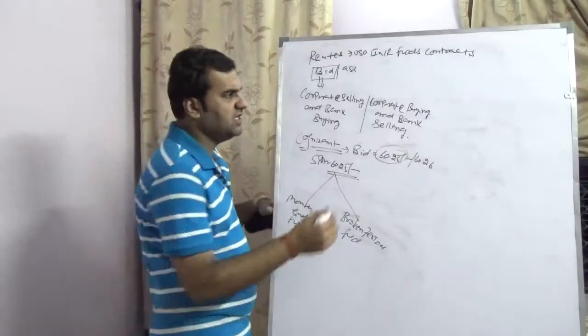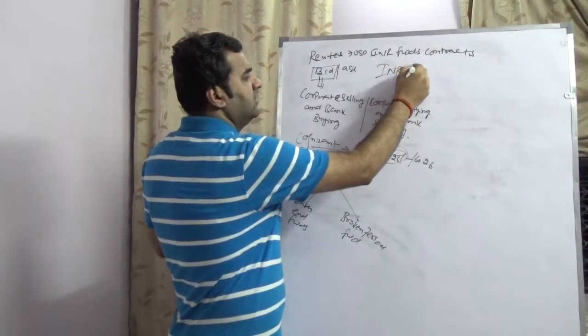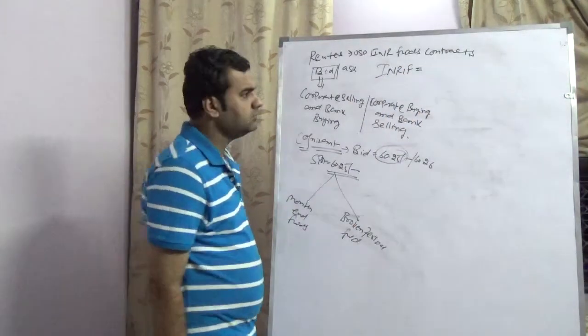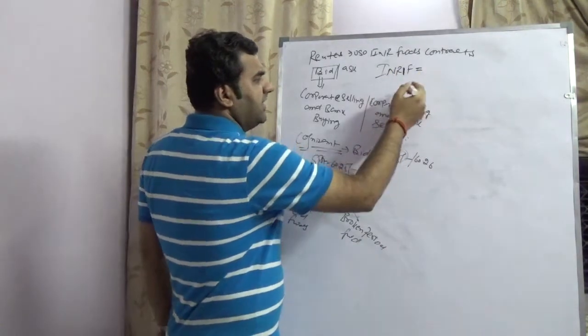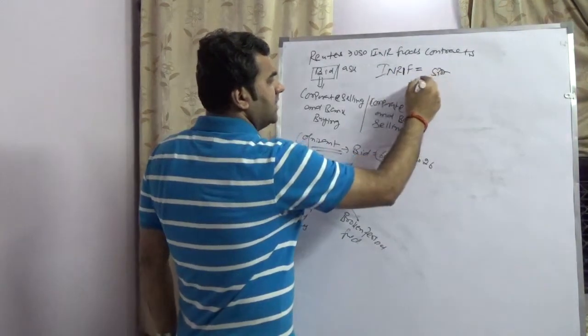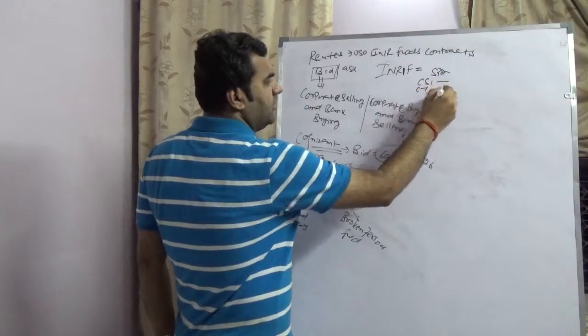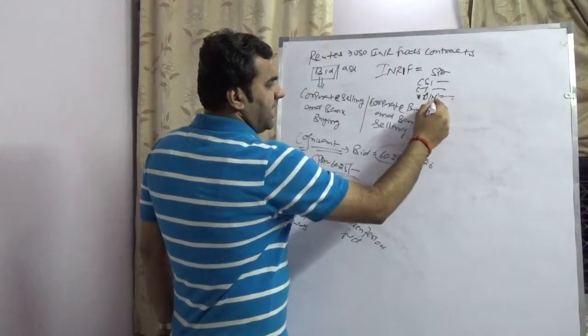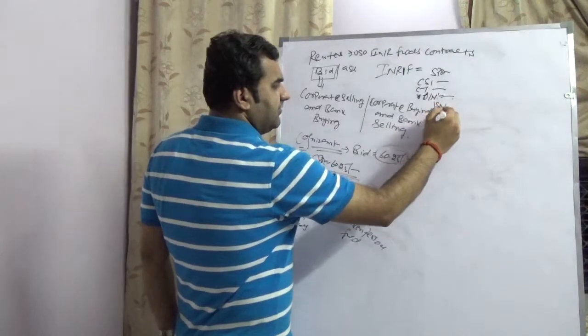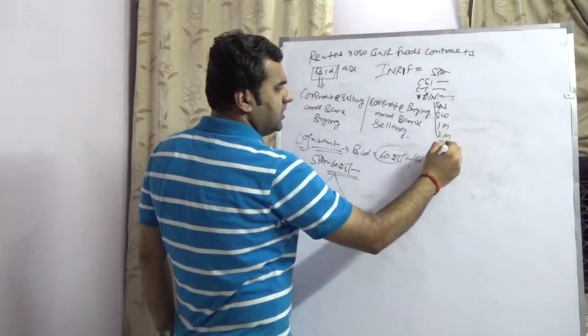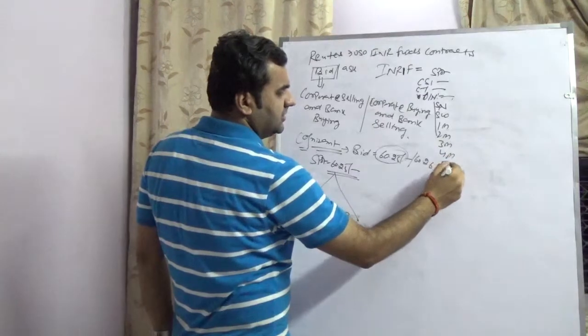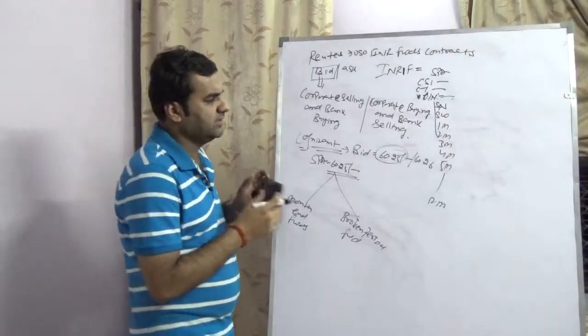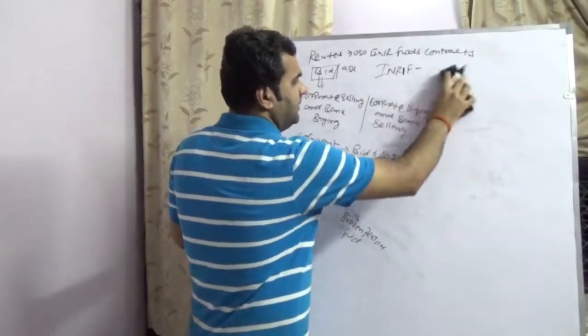For that on Reuters you have to see which is known as INR1F equals to. INR1F will tell you about all the forwards. It will tell you the forward rate, it will give you the spot, it will give you the cash spot, it will give you the cash tom and it will give you the tom, it will give you the overnight. And then it will give you the spot next, it will give you the spot week, then 1 month, 2 month, 3 month, 4 month, 5 month, to 12 month. So every day it will give you the rate.